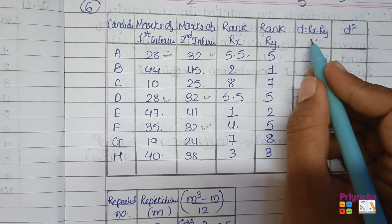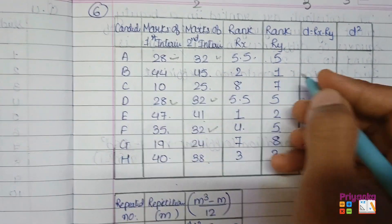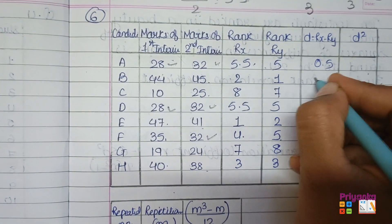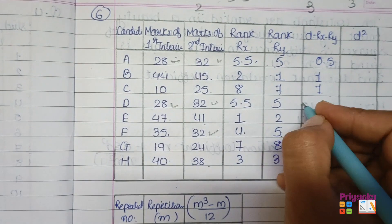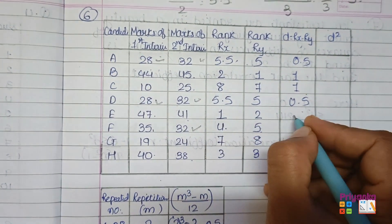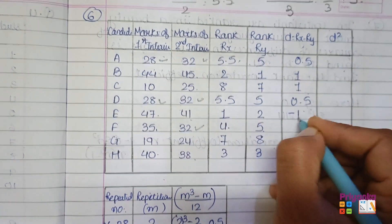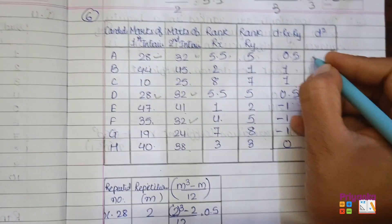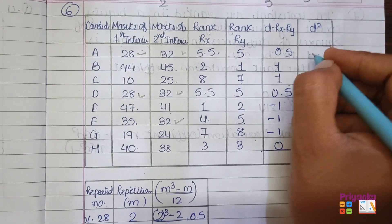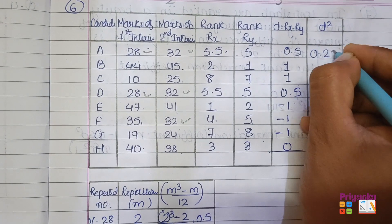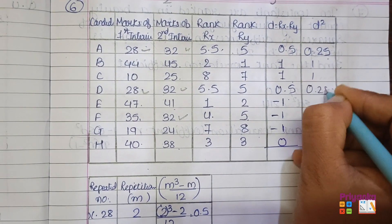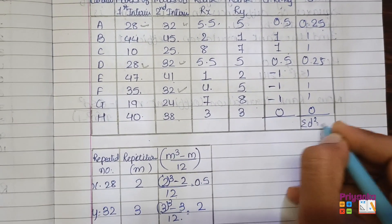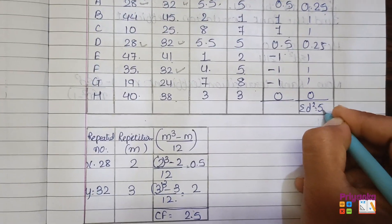Compute D by subtracting rank columns: 5.5−5 = 0.5; 2−1 = 1; 8−7 = 1; 5.5−5 = 0.5; 1−2 = −1; 4−5 = −1; 7−8 = −1; 3−3 = 0. Then D²: 0.25, 1, 1, 0.25, 1, 1, 1, 0. Total sigma D² = 5.50.